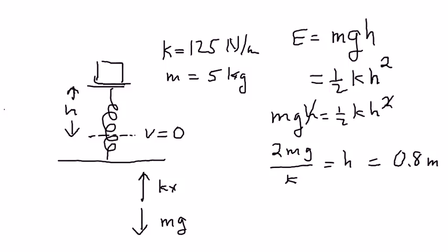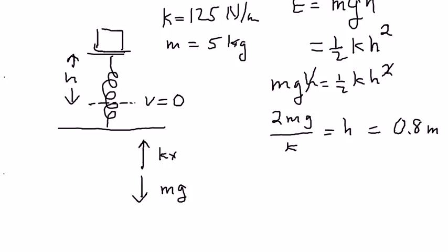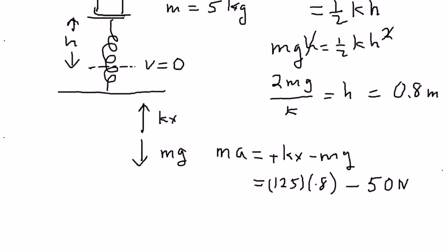So this is interesting because what this is telling me is that ma is equal to plus kx minus mg. If you go through and do the numbers, the upward force looks like 125 times 0.8 and the downward force looks like 50 newtons, that's just mg.